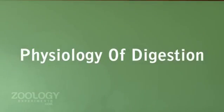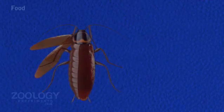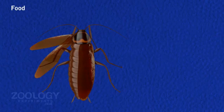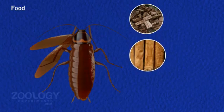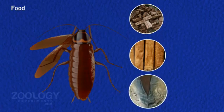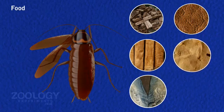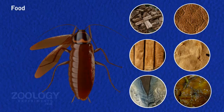Physiology of Digestion. Cockroach is feeding on any kind of animal or vegetable matter, including wood, book bindings, cloth, leather, paper, paste, glues, hairs, and even its own cast cuticle. It usually feeds at night and is identified as an omnivore.